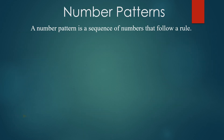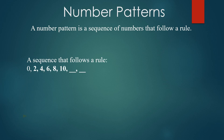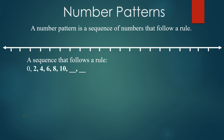What is a number pattern? A number pattern is a sequence of numbers that follow a rule. In fact, every pattern follows a special rule. Now let's look at a sequence that follows a simple rule. Here is a number line starting from 0 and the sequence is 0, 2, 4, 6, 8, 10. So what is the next number? By adding 2 each time, after 10 it is going to be 12 and then 14.